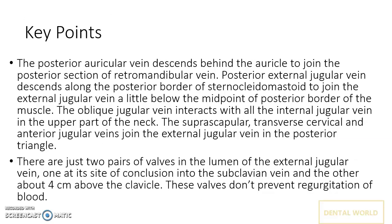Now I will highlight some key points of the EJV. The posterior auricular vein descends behind the auricle to join the posterior section of the retromandibular vein. The posterior external jugular vein descends along the posterior border of the SCM to join the external jugular vein a little below the midpoint of the posterior border of the muscle. The oblique jugular vein connects with the internal jugular veins in the upper part of the neck. The suprascapular, transverse cervical, and anterior jugular veins join the EJV in the posterior triangle.